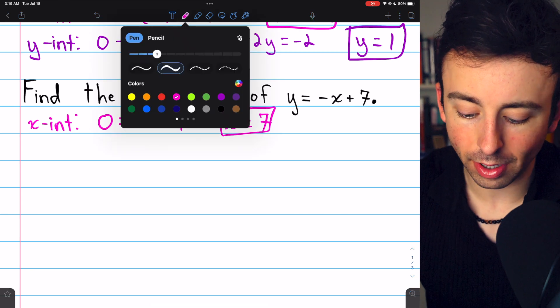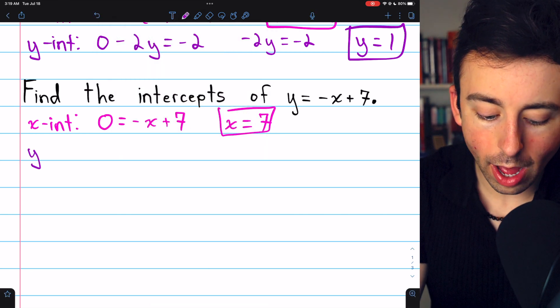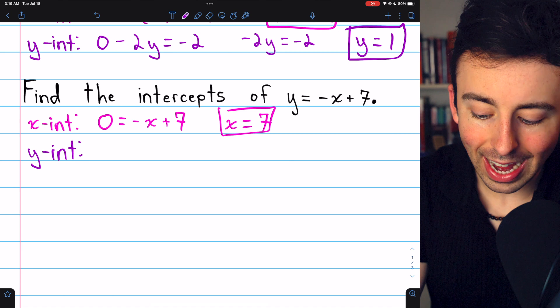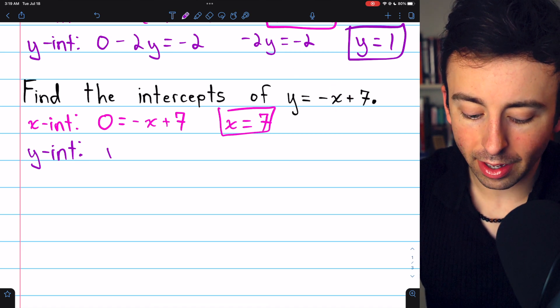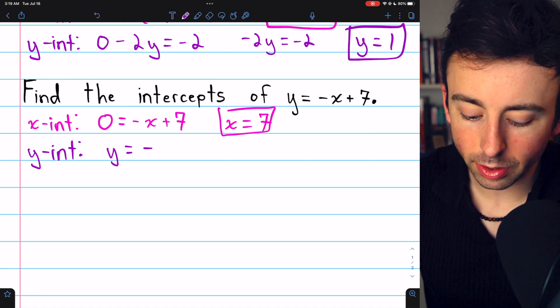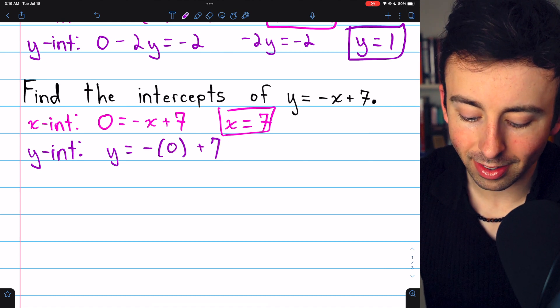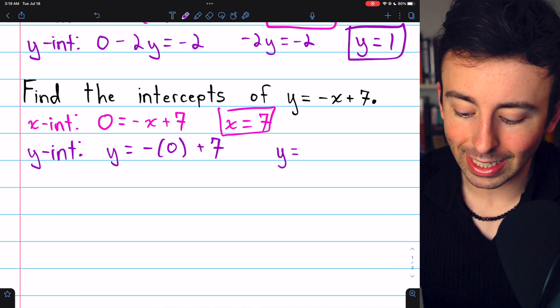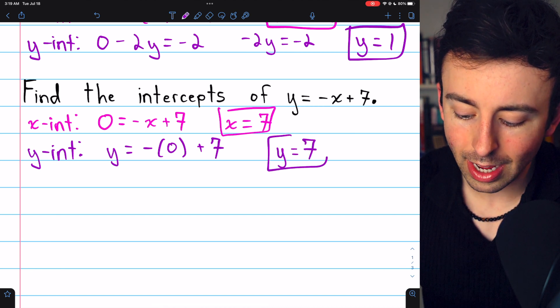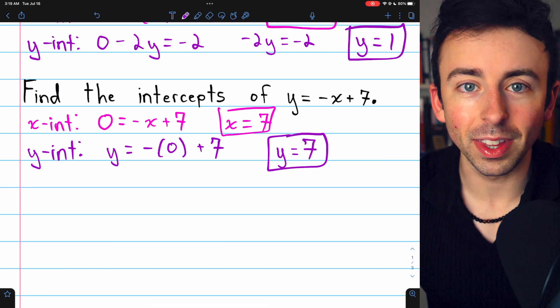Moving on to the y-intercept, we'll set x equal to 0, and then solve for y. Thus, we have y equals negative 0 plus 7. Negative 0 is just 0, and so this immediately gives y equals 7 as the y-intercept of this line.